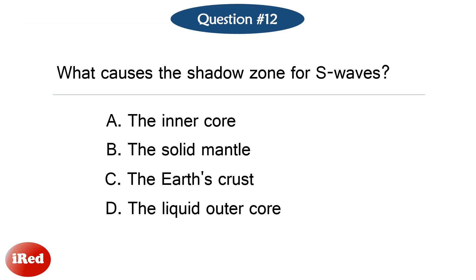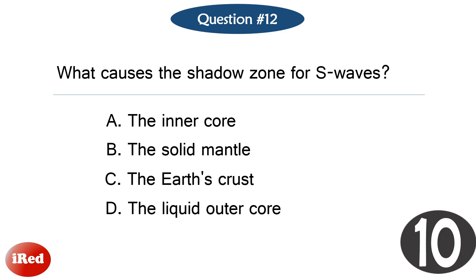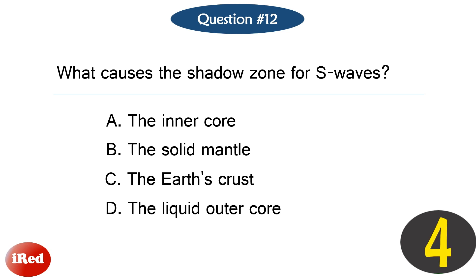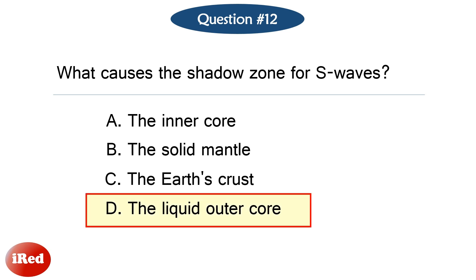Question number twelve. What causes the shadow zone for S waves? The correct answer is letter D, the liquid outer core.